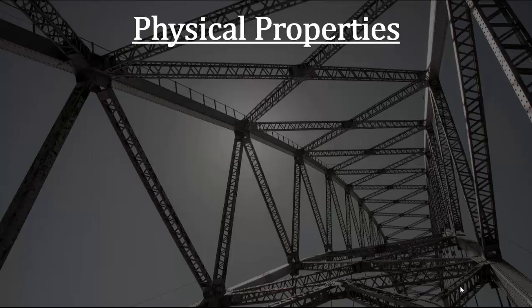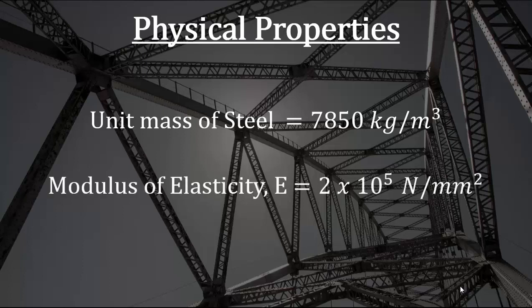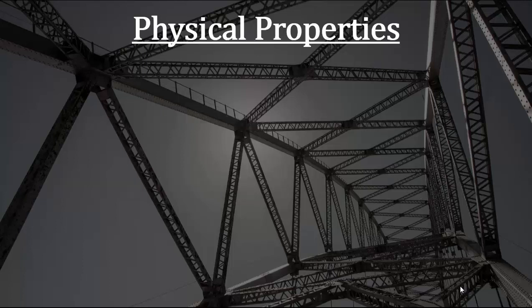Coming to the physical properties of steel: the unit mass of steel is 7850 kg per cubic meter, meaning one cubic meter of steel weighs 7850 kg or 7.85 tonnes. The modulus of elasticity of steel is 2×10⁵ Newton per millimeter square, or you can say megapascal.